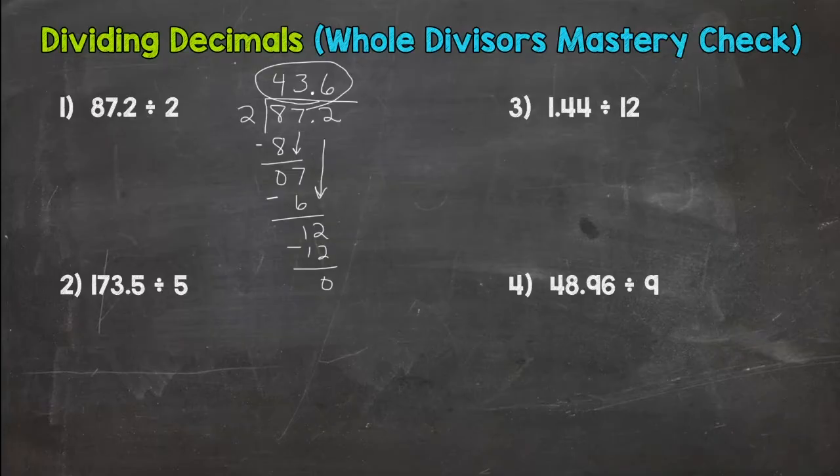Hopefully we are off to a good start. So let's go to number two. 173 and five tenths divided by five. Divisor is whole, so bring that decimal straight up.